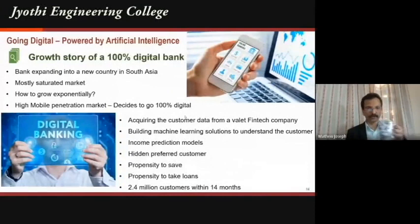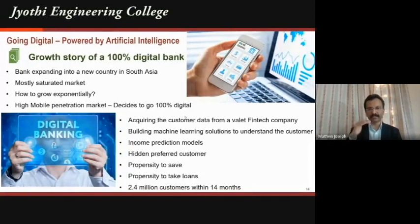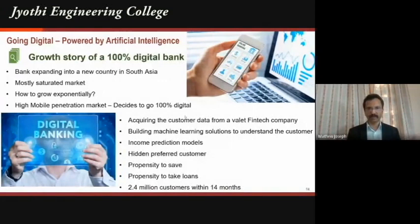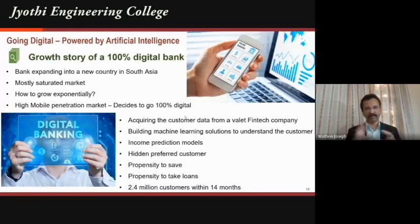Our bank operates in 16 countries, and two years ago we expanded to a new country in South Asia. This country has a young population, high mobile penetration, and almost everyone has internet connectivity. When we wanted to expand there, we had three options: open physical branches in key cities — requiring heavy investment; acquire a local bank — also requiring heavy investment; or take a third, data-driven approach.